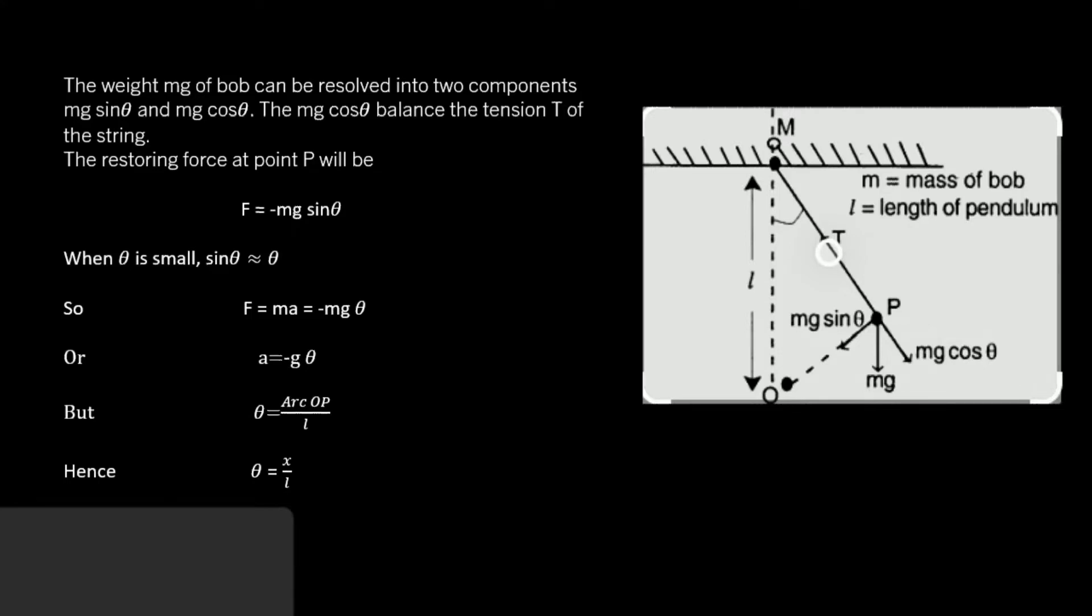When theta is small, we use small angle approximation: sin theta approximately equals theta. The above equation becomes F equals minus mg theta.